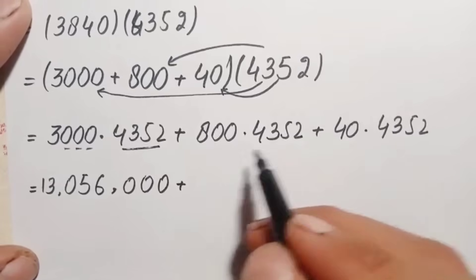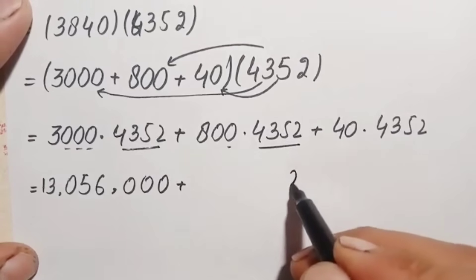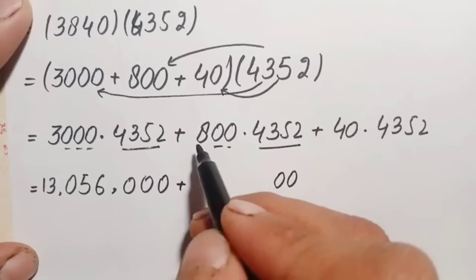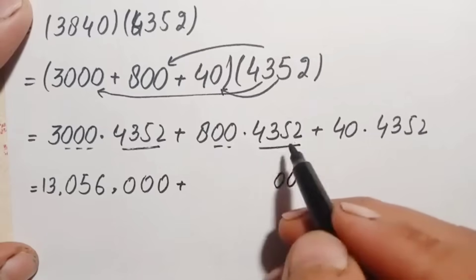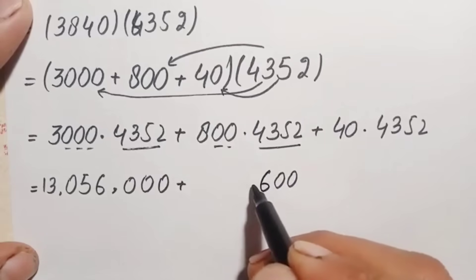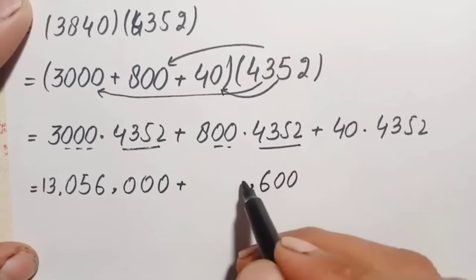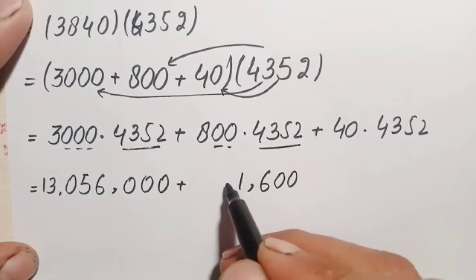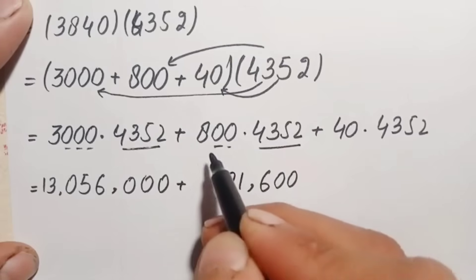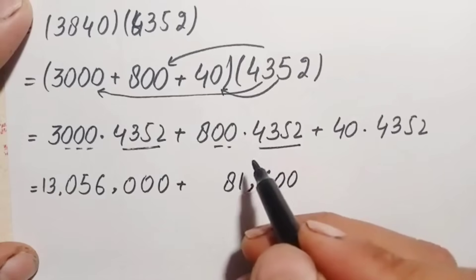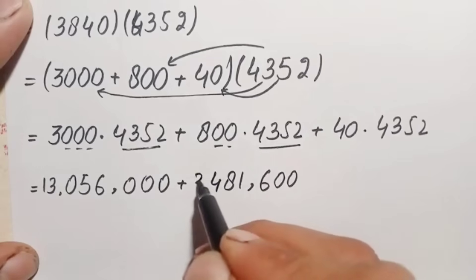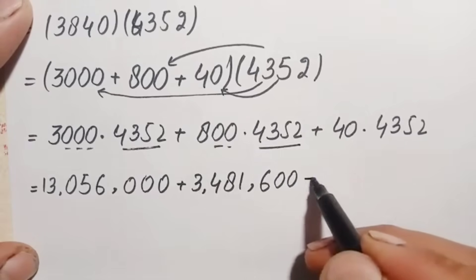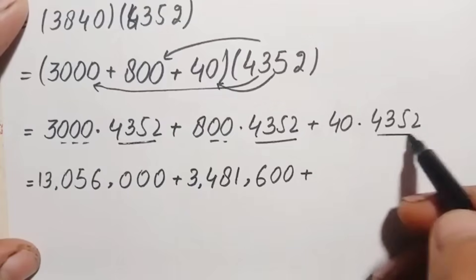Next, 800 × 4352: two trailing zeros, then 8 × 4352 = 8×2=16 (carry 1), 8×5=40+1=41 (carry 4), 8×3=24+4=28 (carry 2), 8×4=32+2=34 — giving 34,816. So 800 × 4352 = 3,481,600.